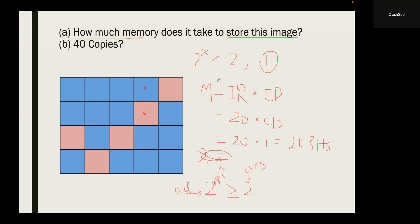Quick recap: first we write the formula — memory equals image resolution times the color depth of the photo. The easy one is image resolution, which equals the amount of pixels in a photo, so we count them and write 20. Next, to figure out the color depth, first count how many colors the photo uses — in this case, two colors. Then use the formula 2 to the power of x is bigger than or equal to the number of colors. X equals the amount of binary digits needed, which here is 1. So color depth is 1, and we multiply to get 20 bits. The unit is always bits.